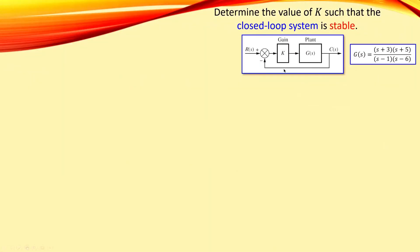The following situation is given. We have the gain K cascaded with our plant, and we have the unity gain feedback configuration. The plant transfer function has two zeros at minus three and minus five, but two poles at plus one and plus six, and both are in the right half plane. So this system is already unstable in open-loop configuration, and we need feedback control to make it stable. The question is to determine the value of K such that the closed-loop system is stable.